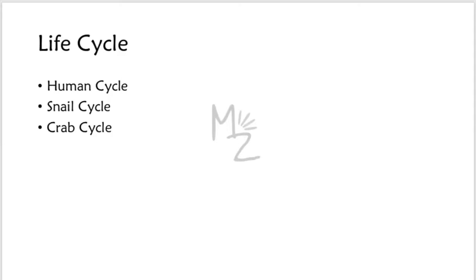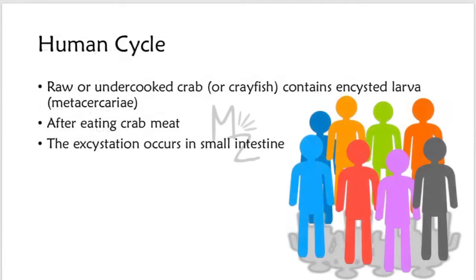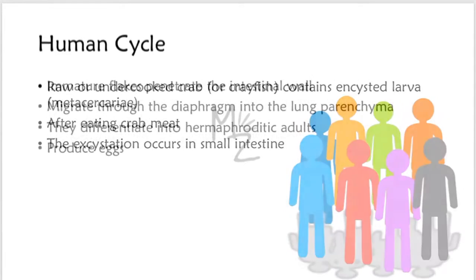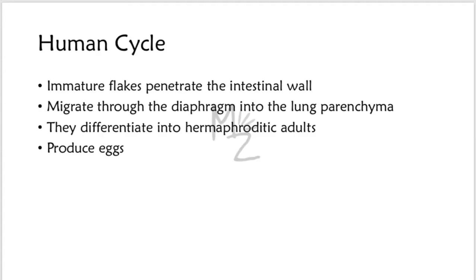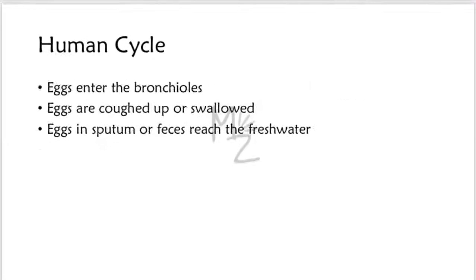The life cycle of Paragonimus has three stages: the human cycle, the snail cycle as it is the first intermediate host, and the crab cycle as it is the second intermediate host. Humans are infected by eating raw or undercooked crab meat or crayfish containing encysted larvae termed metacercariae. After excystment in the small intestine, the immature lung flukes — Paragonimus westermani — penetrate the intestinal wall and migrate through the diaphragm into the lung parenchyma. There they differentiate into hermaphroditic adults, which produce eggs that enter the bronchioles and are coughed up or swallowed.